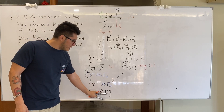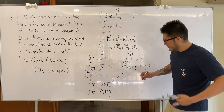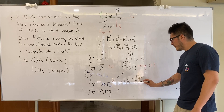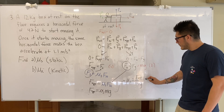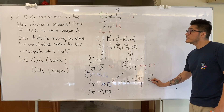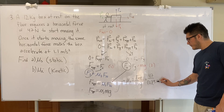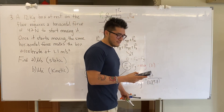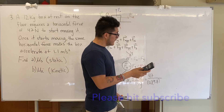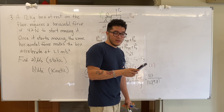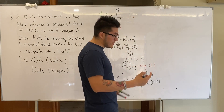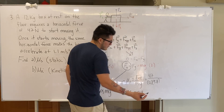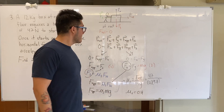We have all the values: mass is 12 kilograms, applied force is 47 newtons. So mu_s equals 47 divided by 12 times 9.8, which gives approximately 0.4. This makes sense because the coefficient of friction should be a number between 0 and 1, so 0.4 looks correct. That completes part a.